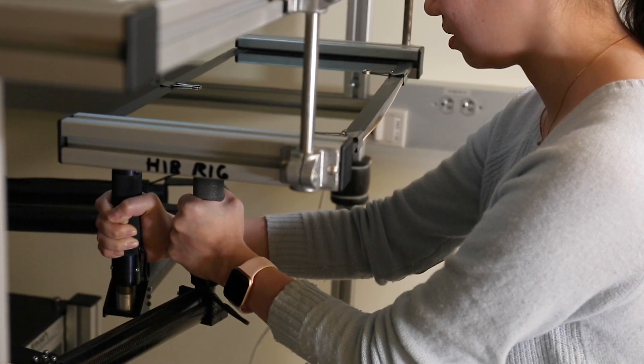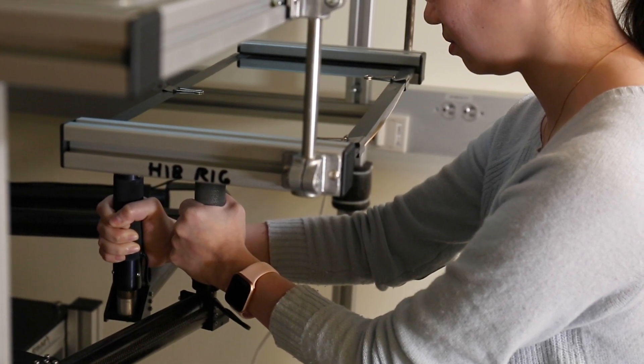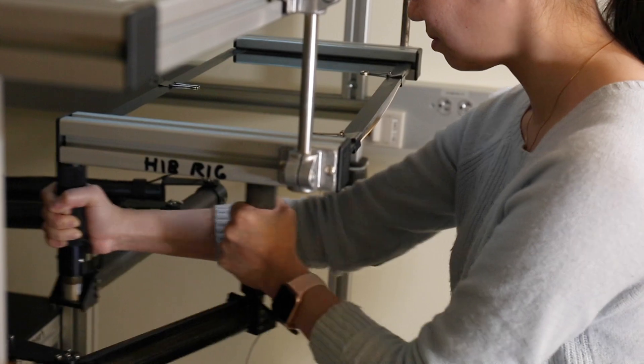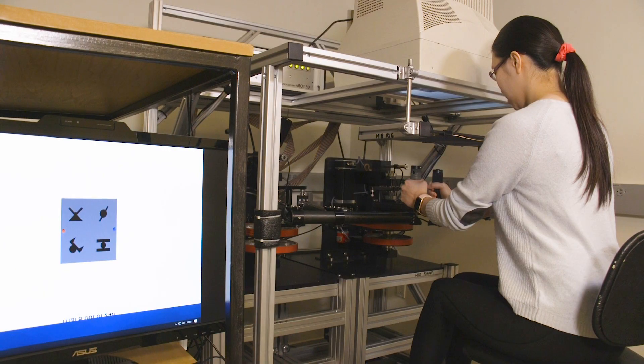We get our participants to hold on to the handles of two robots, so there's a robot held by the right hand and one by the left hand, and you see these blue and red dots show her the positions of her hand.